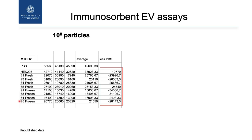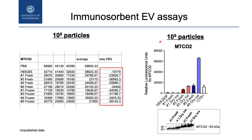I was looking at the marker MTCO2. When I subtracted what I collected from the blank — in this case PBS — I got negative numbers, meaning I don't have vesicles that are positive for this marker. But when I repeated it just increasing the amount of vesicles — loading 10 to the 8 particles I got nothing, but loading 10 to the 9 particles — some samples were negative as expected, but the others had this marker on the surface. I confirmed this by western blot as well.